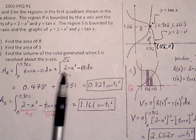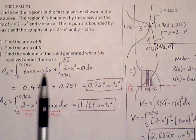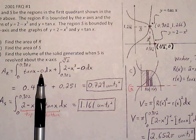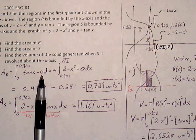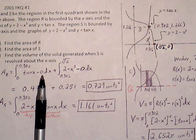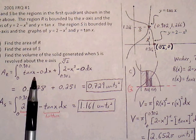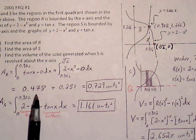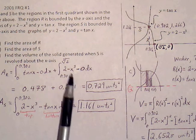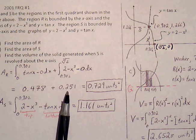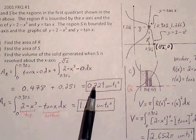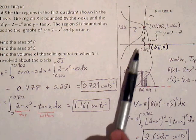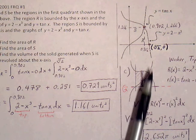Going through and finding the integral using the integral feature — Fn integral — in our graphing calculator, this will result in 0.478 for the first integral. The second one will produce 0.251. Adding those two together, 0.729 square units will be the area for R.